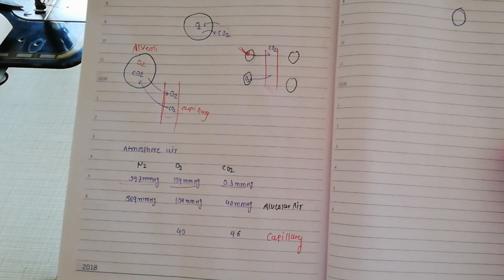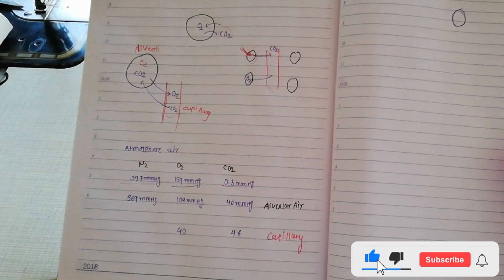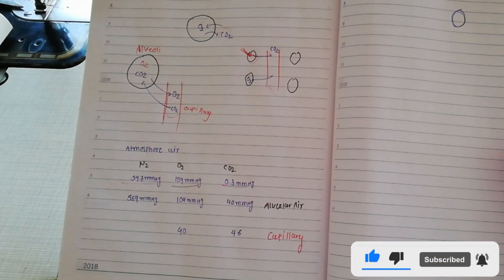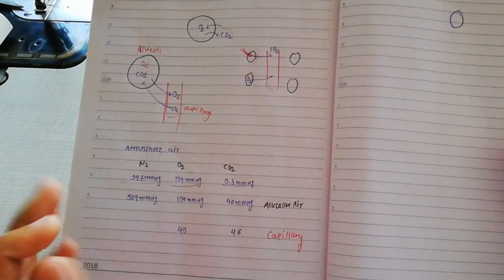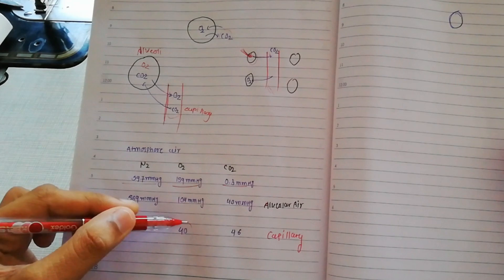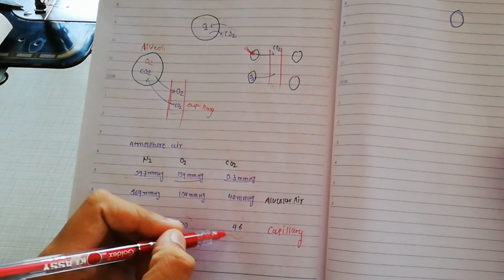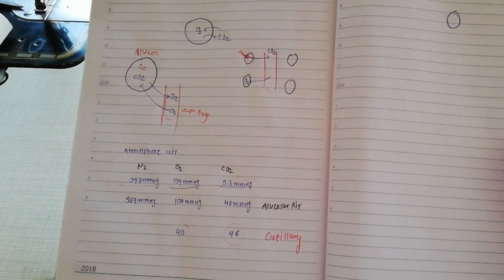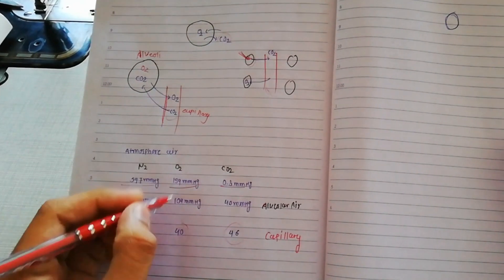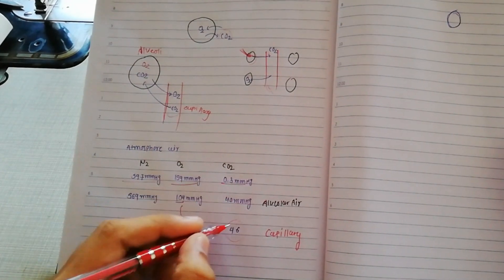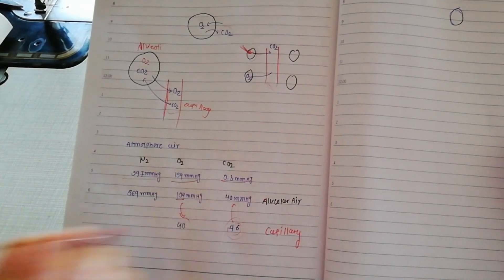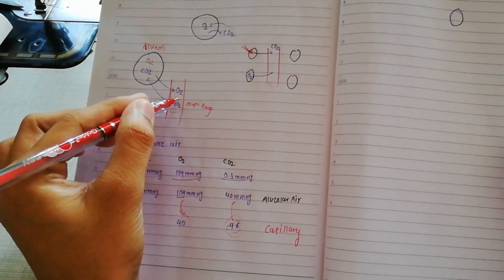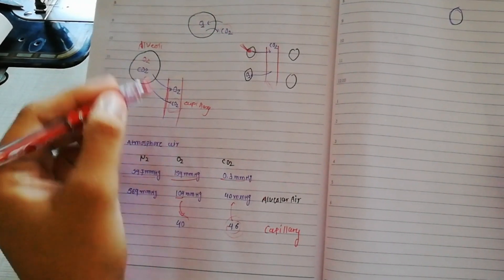These changes are due to some air remaining in the lungs, which you have learned in gaseous exchange in physiology. Now in the capillary, oxygen's pressure is 40 mmHg and CO2's pressure is 46 mmHg. So diffusion occurs from higher to lower pressure — oxygen diffuses from the alveoli into the capillary, and carbon dioxide, at 46 mmHg, goes from the capillary to the alveoli at 40 mmHg.